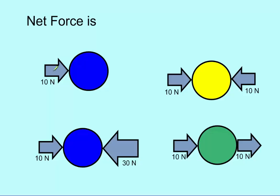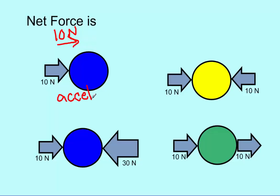If we take a look at this ball, it has 10 newtons of force being applied to it. We know that there's 10 newtons being applied to this ball with no other forces, so there's 10 newtons going this way. What do we know about this ball? It is accelerating — it's going to be changing its speed or direction, accelerating in this direction.